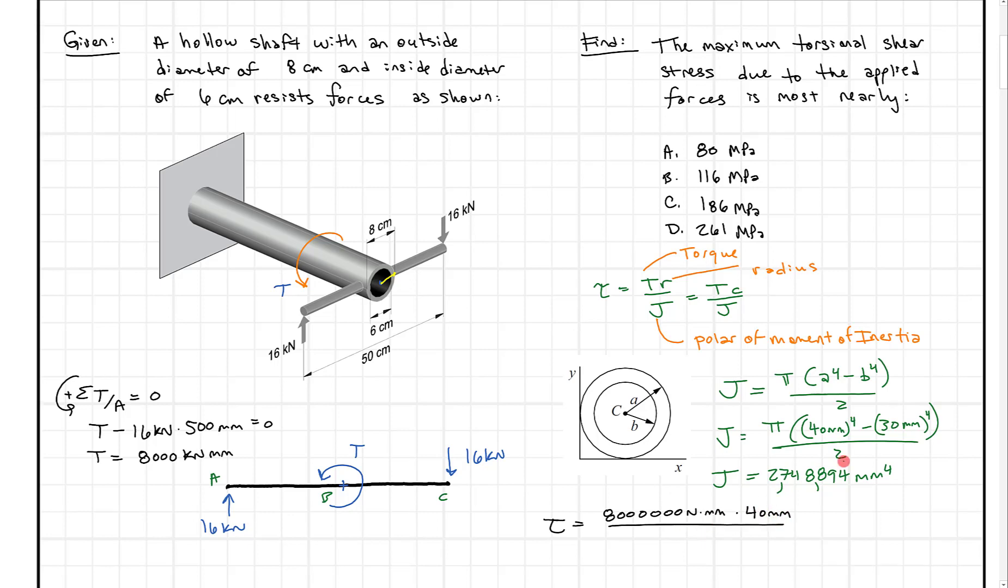And then we'll divide by J, which was 274,8894 millimeters to the fourth. And then when we do that out, we do the math out, what we get is 116.4. And if we look at the units here, we have newtons, and we're going to end up with per millimeter squared. Newton per millimeter squared. And what I know in terms of conversions is 1 newton per millimeter squared equals 1 megapascal, which is great because when we do that, this also equals 116 megapascals. And I took a little bit of liberty to round there, but we know this is our answer.